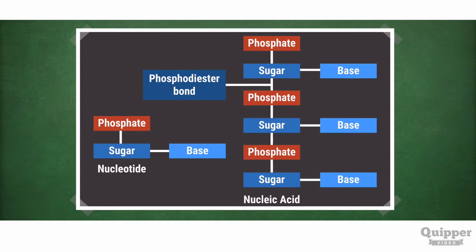Of course, there is a bond that links them together. This is called the phosphodiester bond. It links the sugar of a nucleotide to a phosphate of another nucleotide.